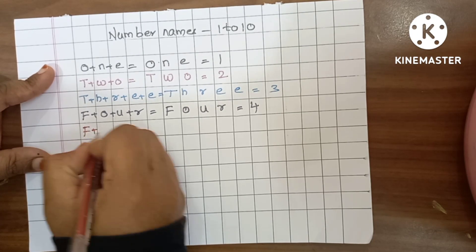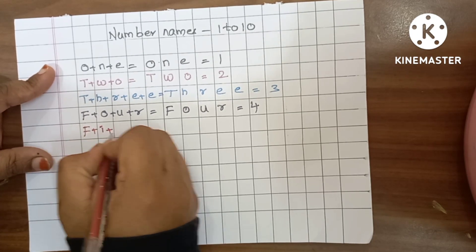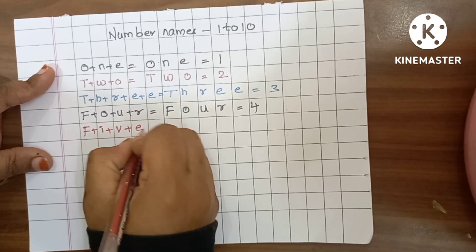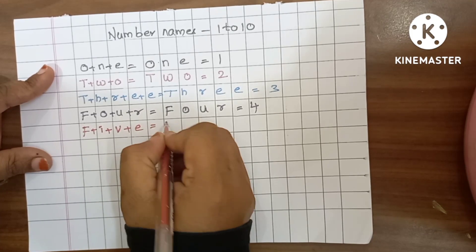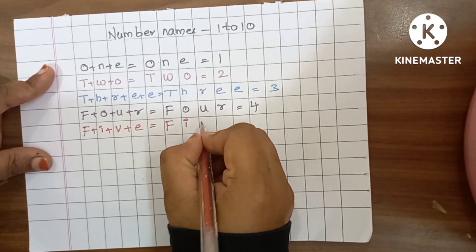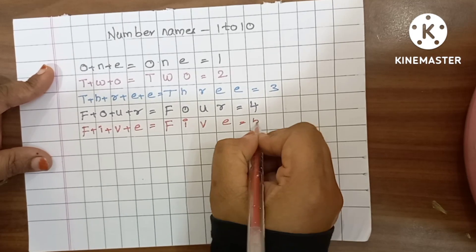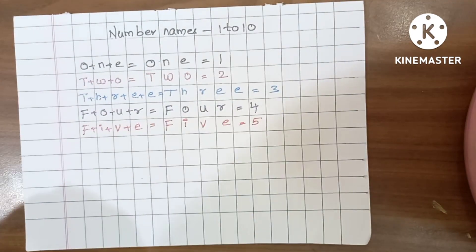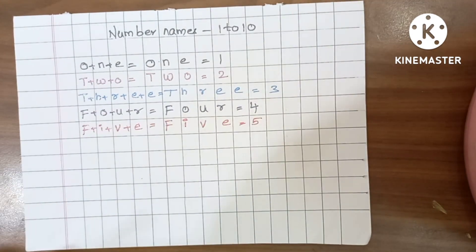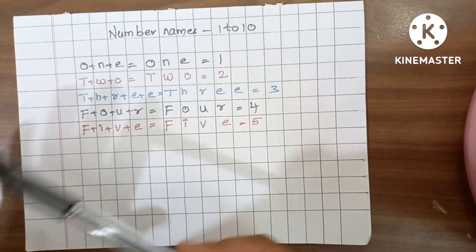5. F plus I plus V plus E is equals to 5. F, I, V, E, 5, black color.